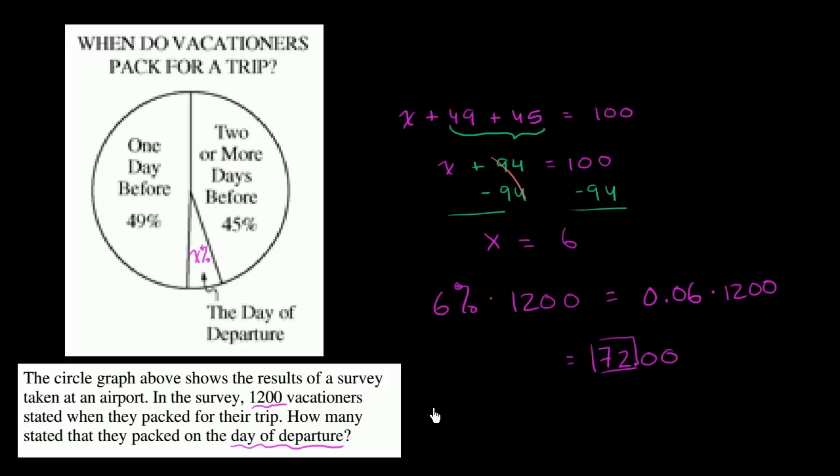These 72 people represent 6% of the 1,200 vacationers surveyed.